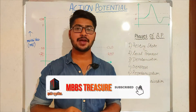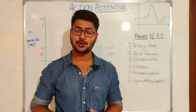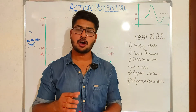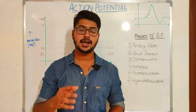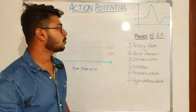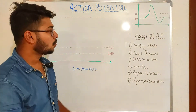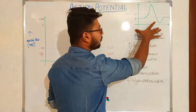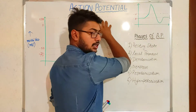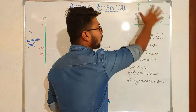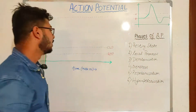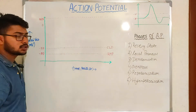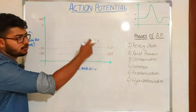Hey guys, my name is Avisek, and welcome back to MBPS Phraser Channel. Today we are going to read about the action potential graph of a neuron. It comes under the physiology of excitation of a tissue. We will learn the different phases of the action potential graph of a neuron and why these phases appear in the graph.